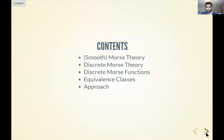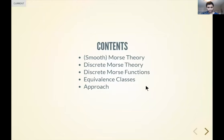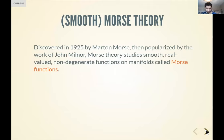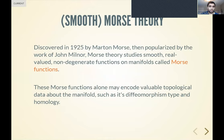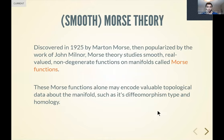The contents of the talk will be a background of where discrete Morse theory came from, starting with smooth Morse theory, then discrete Morse theory basics, discrete Morse functions, and equivalence classes. Smooth Morse theory was developed back in 1925 and popularized by John Milnor. They studied smooth real-valued non-degenerate functions on manifolds. These Morse functions alone encoded valuable topological information: diffeomorphism type, homology, Betti numbers, and so on.